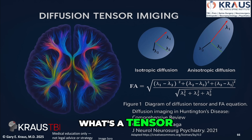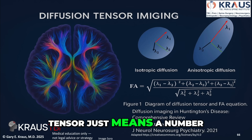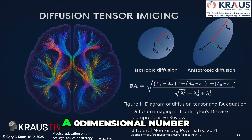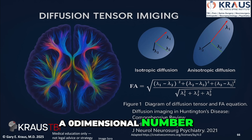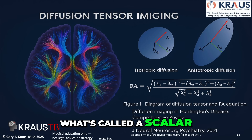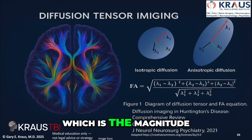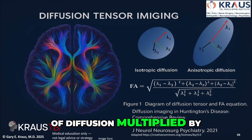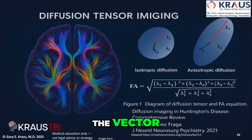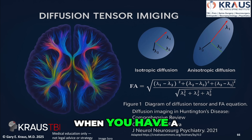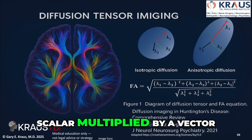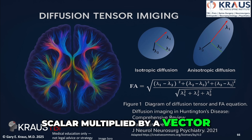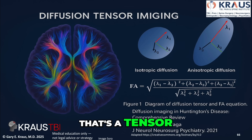What's a tensor? A tensor is a number — a zero-dimensional number called a scalar, which is the magnitude of diffusion, multiplied by the vector, the direction. So when you have a scalar multiplied by a vector, that's a tensor — it tells us the direction in which diffusion is occurring.